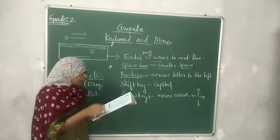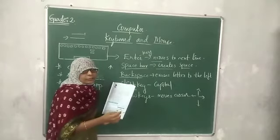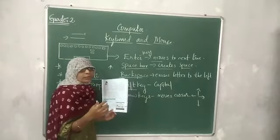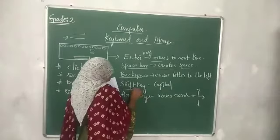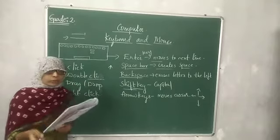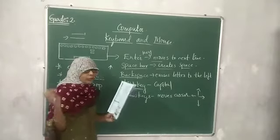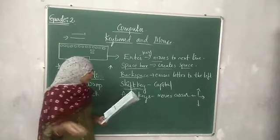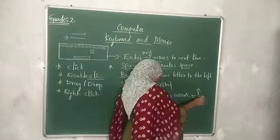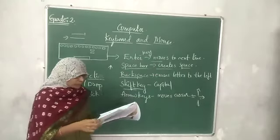Shift key is used to convert letters into capital letters. If you want to use capital letters, you can simply click on the shift key. Then we have arrow keys — four arrow keys are there. These help to move the cursor upwards, downwards, to the right, and to the left. These are some special keys.